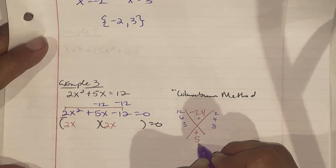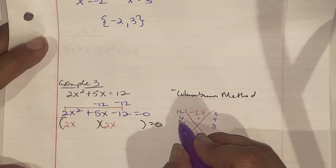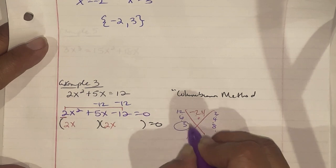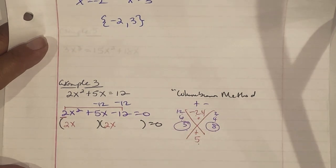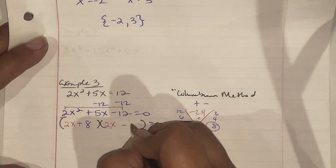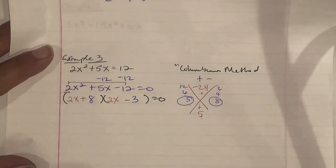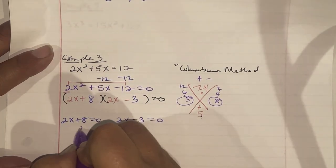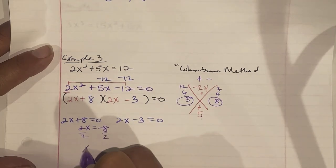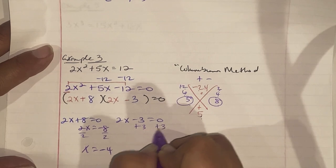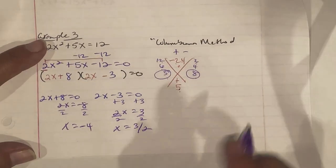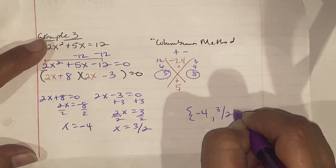24 can be 12 and 2, 6 and 4, or 3 and 8. We want factors of negative 24 that add to positive 5. Only 3 and 8 can give 5. We need a plus and a minus, so the 8 must be positive and the 3 must be negative. Setting up: (2x + 8)(2x - 3) = 0. Solving: 2x = -8 → x = -4; and 2x = 3 → x = 3/2. Our solutions are {-4, 3/2}.